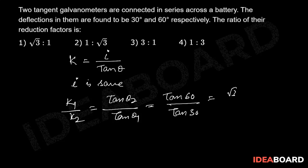tan 60 root 3 divided by 1 by root 3 which is equal to 3 by 1. That is 3 is to 1. So, 3 is the correct option.